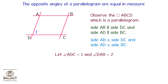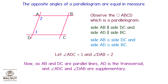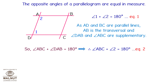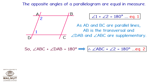Let's consider angle ADC as 1 and angle DAB as 2. Since sides AB and DC are parallel, AD becomes a transversal, and angle ADC and angle DAB are supplementary. Therefore, angle 1 plus angle 2 equals 180 degrees — equation 1. Since sides AD and BC are parallel, AB becomes a transversal, and angle DAB and angle ABC are supplementary. Therefore, angle ABC plus angle 2 equals 180 degrees — equation 2.